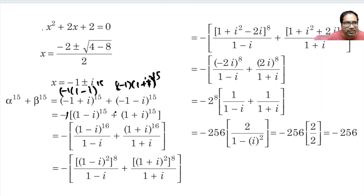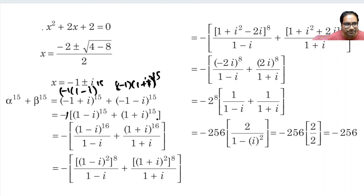When we have (1 + i) or (1 - i), power 16, or power 4, or power 8 would be more helpful. That is why we rewrite (1 - i) whole power 15 as (1 - i) whole power 16 divided by (1 - i). Similarly, (1 + i) whole power 15 is (1 + i) whole power 16 divided by (1 + i). The 16 can be written as 2 times 8, that is: (1 - i) whole squared, whole power 8, and similarly (1 + i) whole squared, whole power 8.